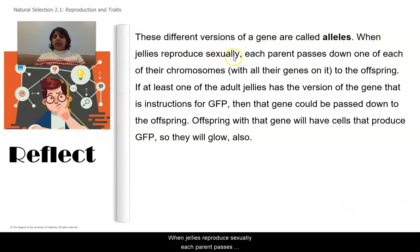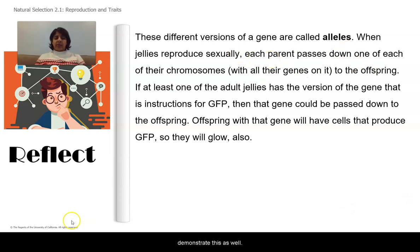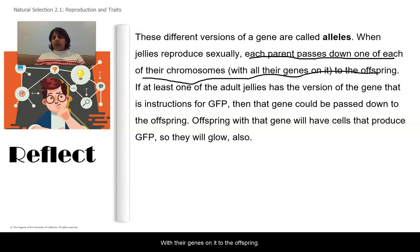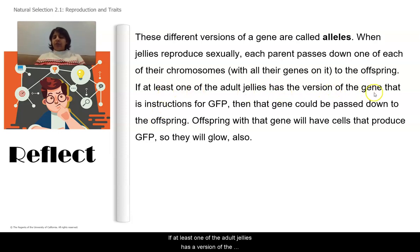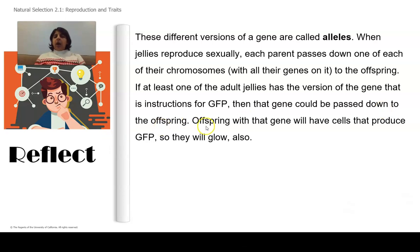When jellies reproduce sexually, each parent passes down one of each of their chromosomes — with their genes on it — to the offspring. Humans have 46 chromosomes, which means 23 come from our biological mother and 23 come from our biological father. If at least one of the adult jellies has a version of the gene that is instructions for GFP, then the gene could be passed down to the offspring, and offspring with the gene will have cells that produce GFP, so they will glow also.